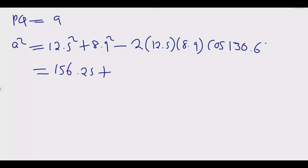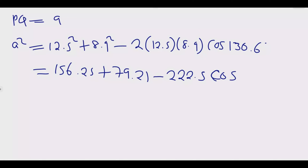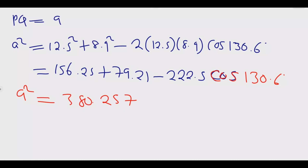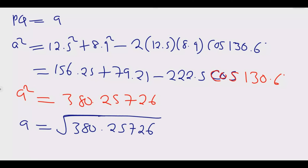Using the calculator: 156.25 plus 79.21, minus two times 222.5 times cosine 130.6 degrees. Simplifying, A squared equals approximately 380.something — use your calculator to get 318.257026. Therefore A equals the square root of 318.257026, which gives A equal to 19.5 centimeters, rounded to one decimal place.